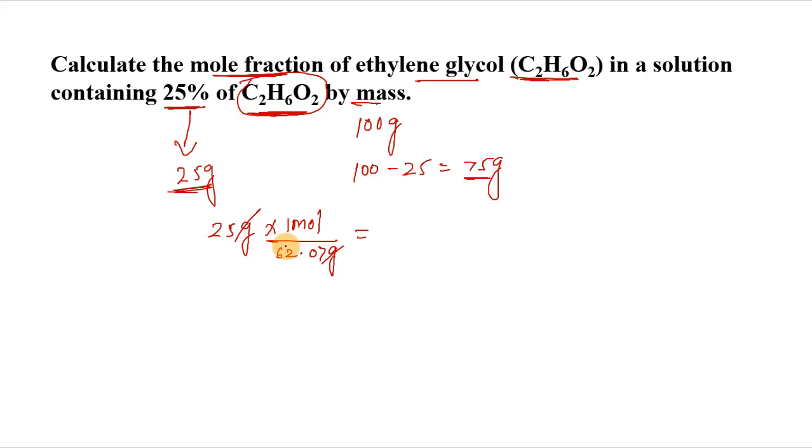The molar mass of ethylene glycol is 62.07 grams per mole, meaning one mole has 62.07 grams mass. We can do the calculation. Grams will cancel out and you divide these values. You will get 0.403 moles of solute.